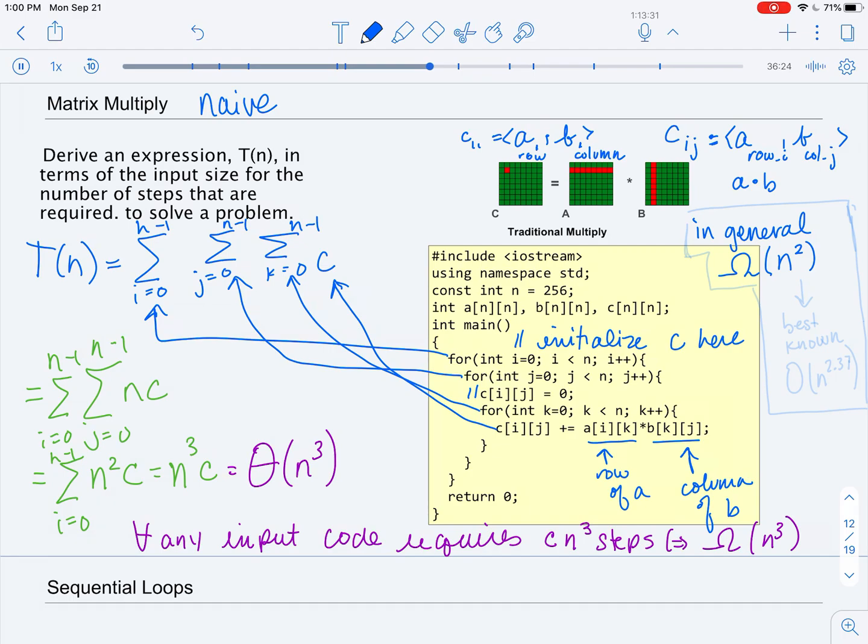And the best known algorithm for matrix multiplication is big O to the 2.37, I think, about 2.37. And you'll notice that there's a gap. So what people who are working on matrix multiplication do is they're trying to bridge this gap between the best known upper bound on the problem and what we know would have to be the lower bound on the problem.